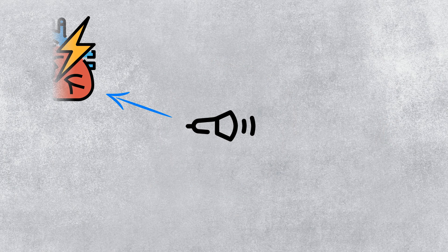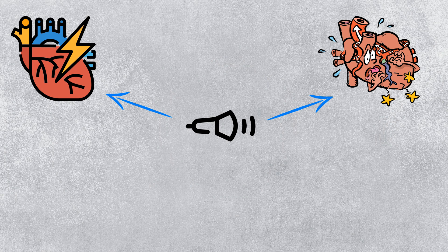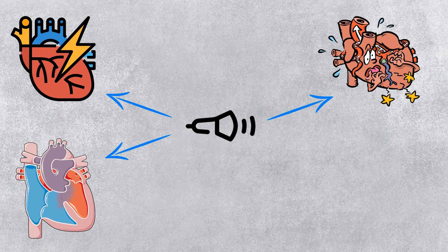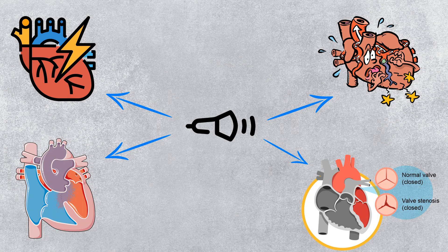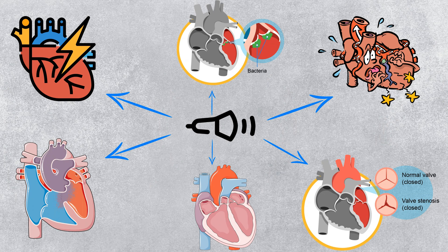Heart muscle damage following a myocardial infarction. Heart failure, where the heart fails to pump enough blood throughout the body. Congenital heart disease. Valvular heart diseases. Cardiomyopathies, where the heart walls become thickened or enlarged, compromising the pumping action of the heart. And infective endocarditis.